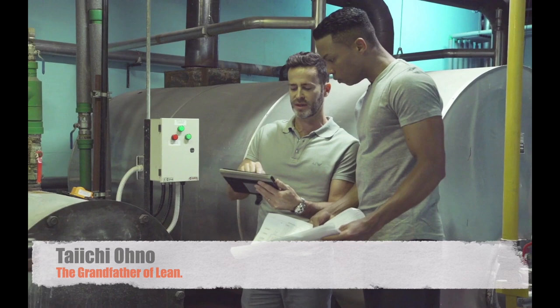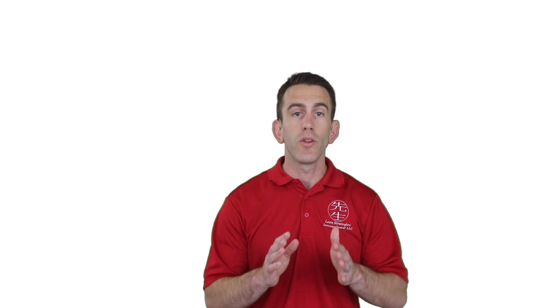While Mr. Ono and Dr. Shingo were key facilitators of the Toyota production system, none of Toyota would have existed without Mr. Sakichi Toyota.